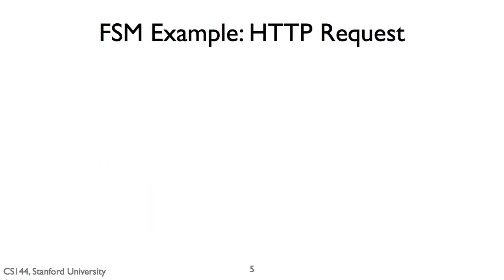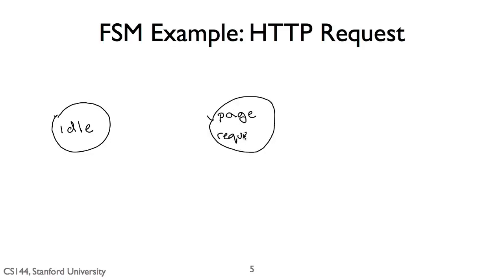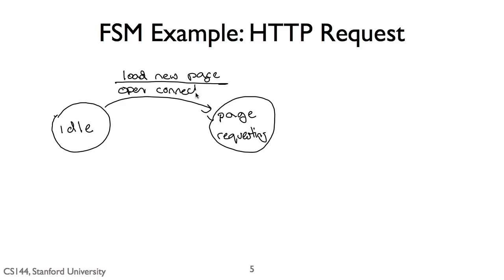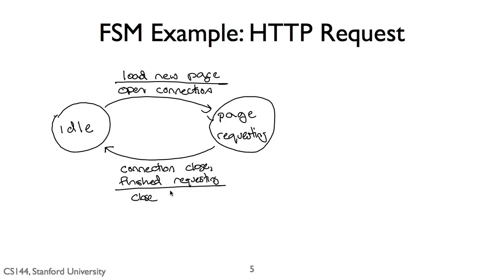Let's walk through an example: an HTTP request. In practice, HTTP requests are a bit more complex than this — there are all kinds of options — so for this example, let's use a very simple form. In our starting state, we are viewing a page or otherwise idle. When we want to load a new page, we transition to the page requesting state. The event is 'load new page' and the action is to open a connection to the web server. Once we've opened a connection, we're now in the page requesting state. We'll transition back to the idle state when the connection closes, or when we finish requesting every resource on the page.